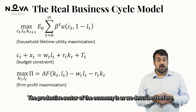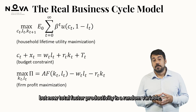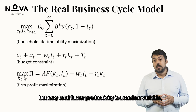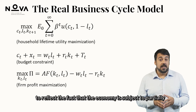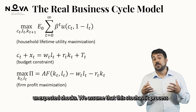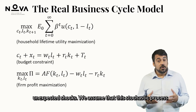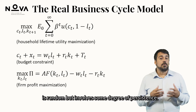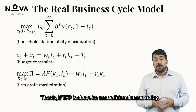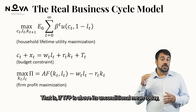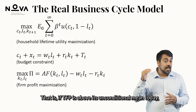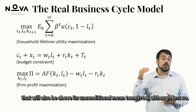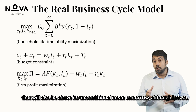The productive sector is as described before. But now, total factor productivity is a random variable to reflect the fact that the economy is subject to partially unexpected shocks. We assume this stochastic process involves some degree of persistence — that is, if TFP is above its unconditional mean today, it is more likely than not that it will also be above its unconditional mean tomorrow, although less so.